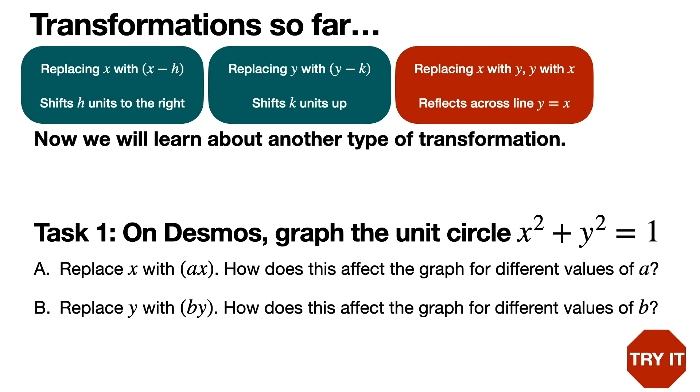We learned in previous lessons that replacing x with (x-h) in a formula shifts the graph h units to the right, and replacing y with (y-k) shifts it k units up. Replacing x with y and y with x causes it to be reflected across the line y = x. That often turns things from horizontal to vertical. Now we're going to learn about a new type of transformation.